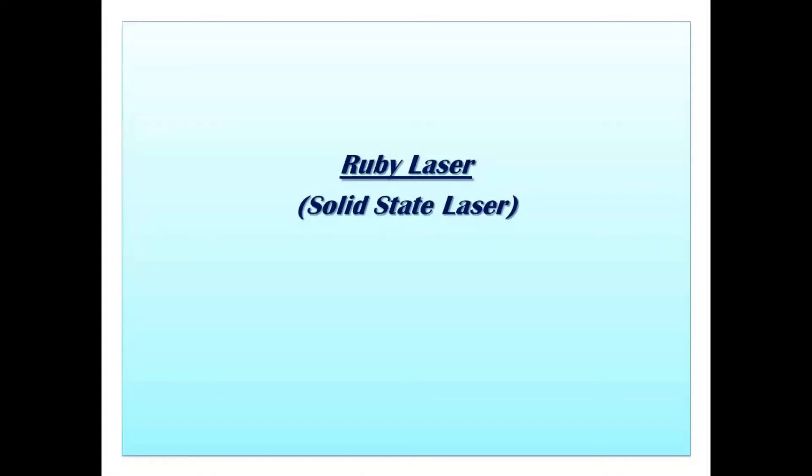So let's study ruby laser. In year 1960, T.H. Maiman of Hughes Research Laboratories produced first laser that is ruby laser. It is a solid state laser as the lasing material is solid that is ruby rod. Here the ruby rod is combination of Al2O3 doped with chromium ions. It is a three level lasing system.